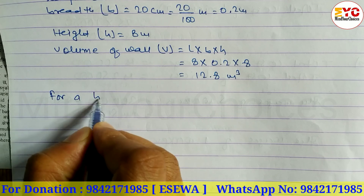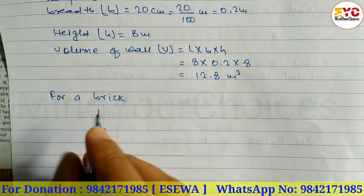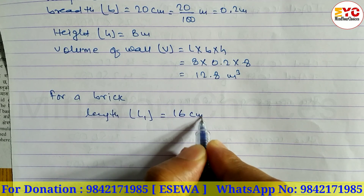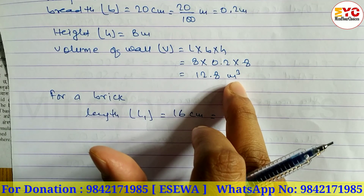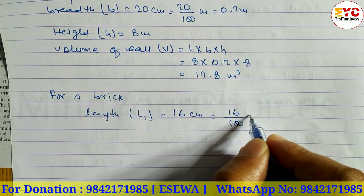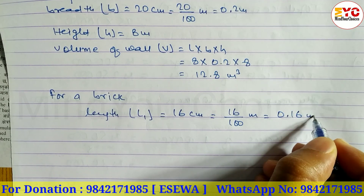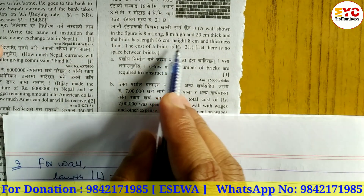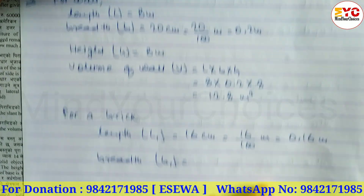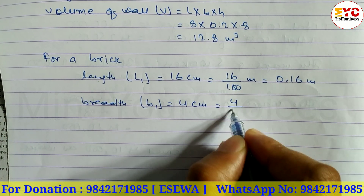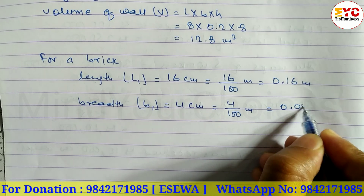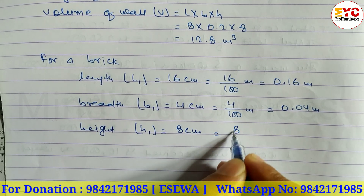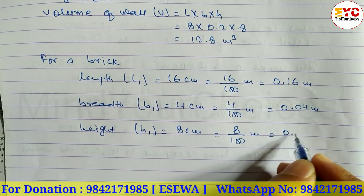For the brick: length L1 is equal to 16 centimeter, which is 16 divided by 100 equals 0.16 meter. Breadth B1 is the thickness, 4 cm, so 4 divided by 100 equals 0.04 meter. Height H1 is equal to 8 cm, so 8 divided by 100 equals 0.08 meter.